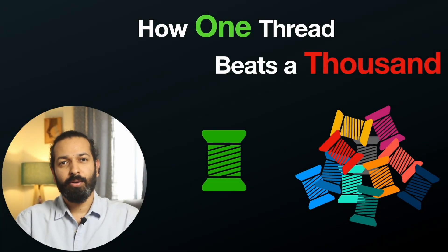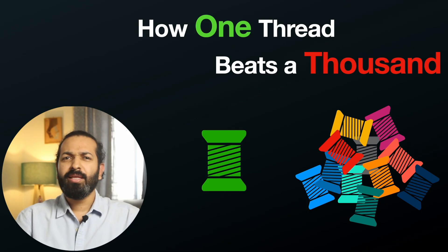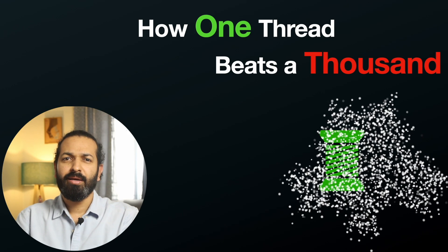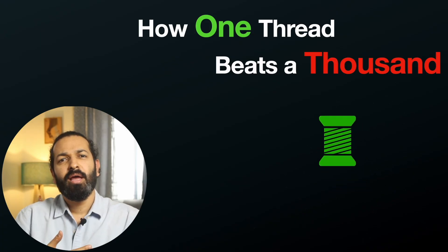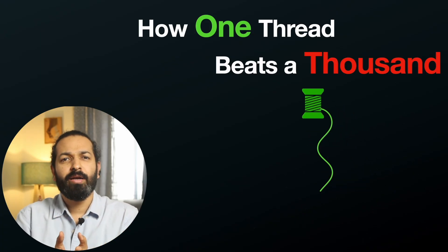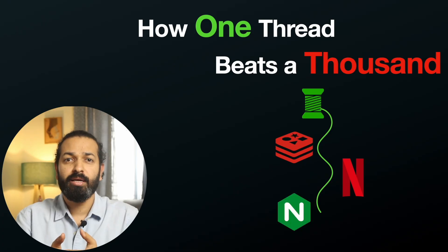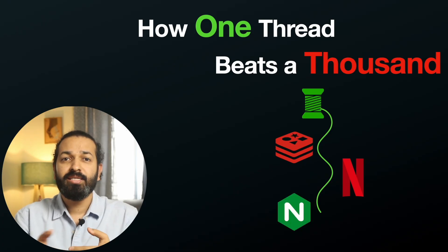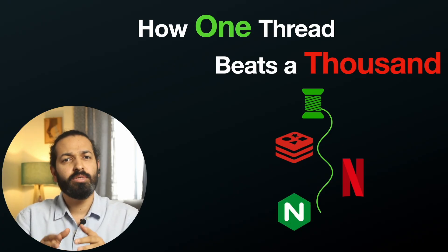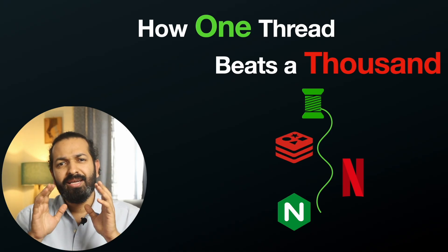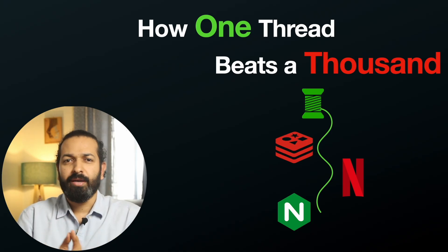Hey guys, welcome to iCode. These days we keep hearing this single-threaded thing everywhere. Redis is single-threaded, that's why it's blazing fast. Netflix's Zuul API Gateway runs on an event loop which is again single-threaded. Nginx handles thousands of connections using a single-threaded event loop. So it's single-threaded and event loop everywhere.